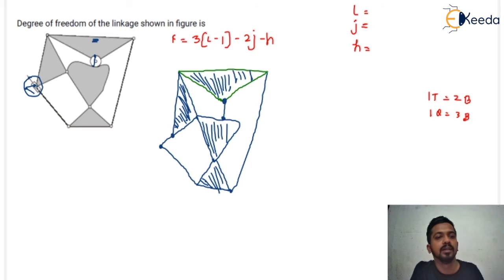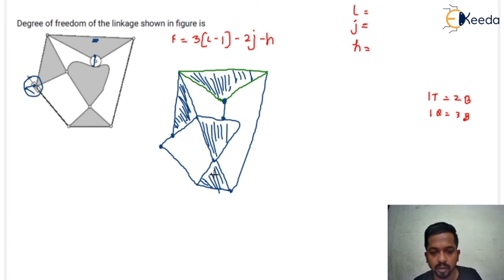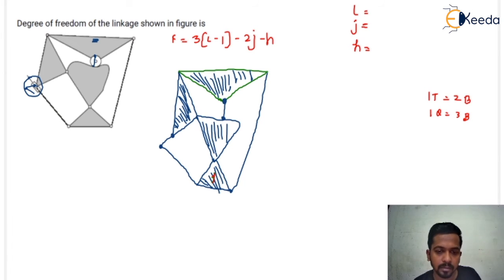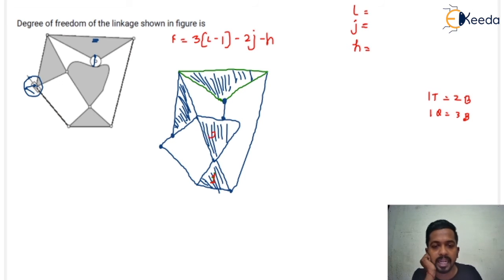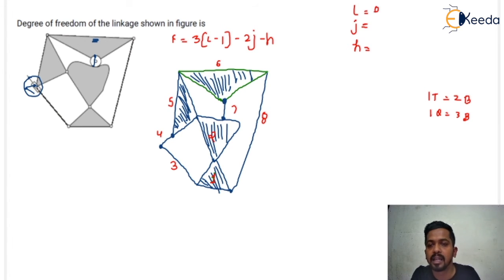Now the diagram is complete. You just need to calculate the number of links and number of joints. First we will calculate the number of links. This is one — because the shaded portion is considered as one link — that is two, three, four, five, six, seven, and eight. So the number of links in the mechanism is eight.